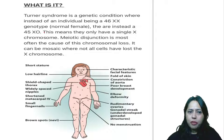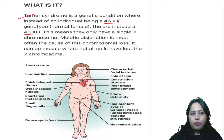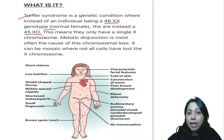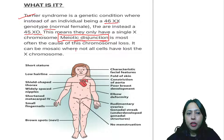This gives more information on Turner's syndrome. Instead of the normal female genotype 46XX, the individual is 45XO - there is only a single X, not two. The cause is meiotic disjunction - whenever meiosis takes place, one X is not carried to the next stage and is missing. It can also be mosaic, where not all cells have lost the X chromosome - only a few of them may have lost it.